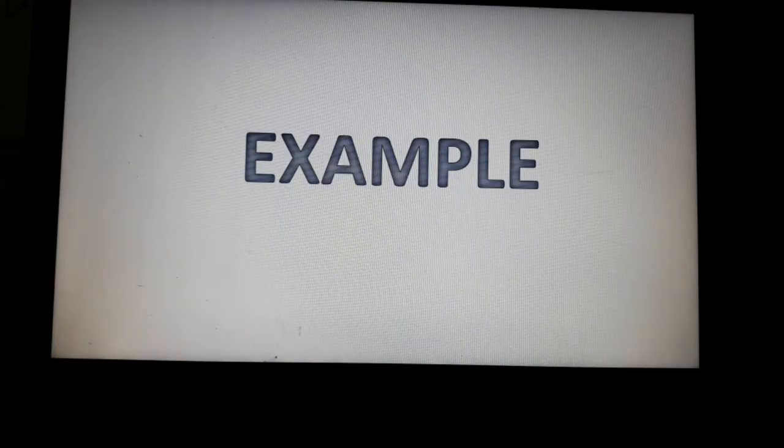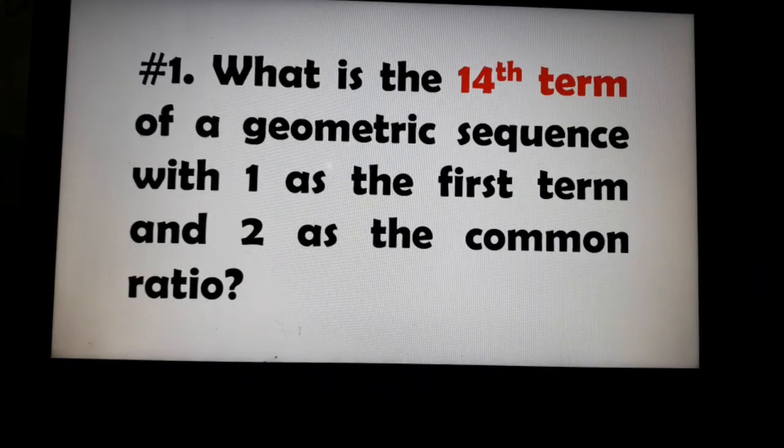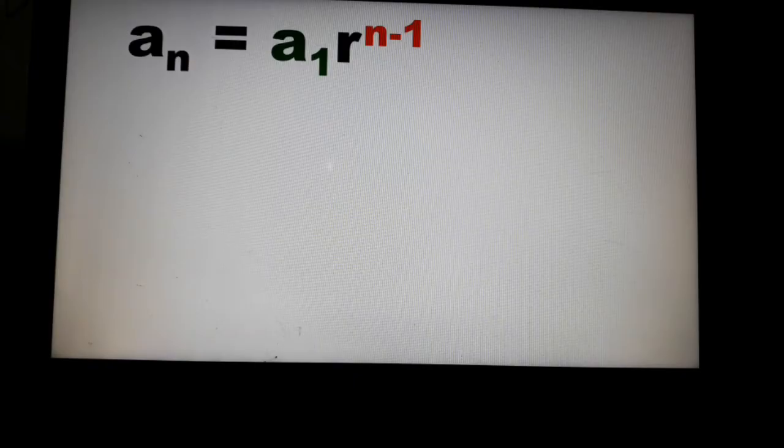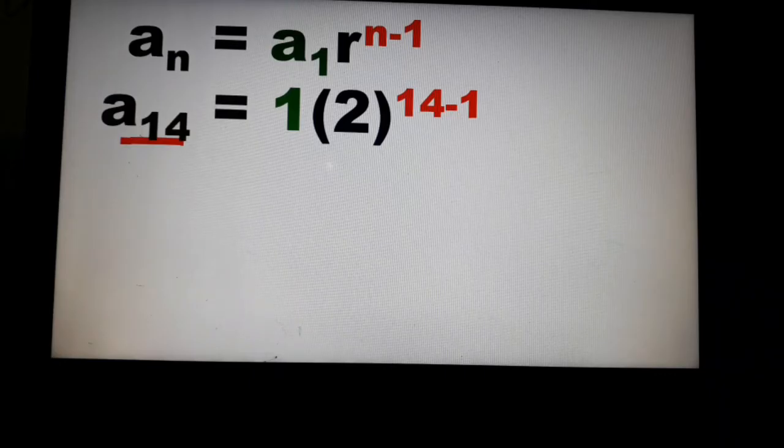Let's have our examples. So we'll use the two problems that we had earlier. Example number one. What is the 14th term of a geometric sequence with 1 as the first term and 2 as the common ratio? So given to us the first term and common ratio. We can use this in our formula. So you have a_n is equal to a_1 times the common ratio raised to n minus 1. So you have a_14, this is what we're looking for. Then your 1 is the first term. 2 is your common ratio. And then 14 minus 1.